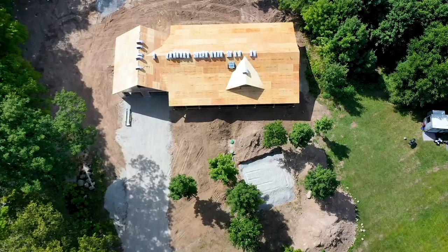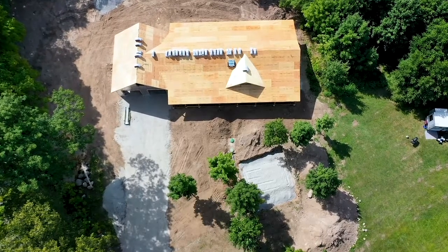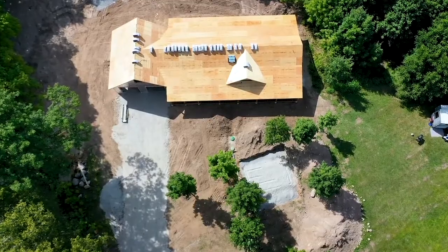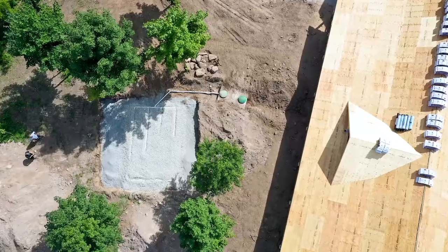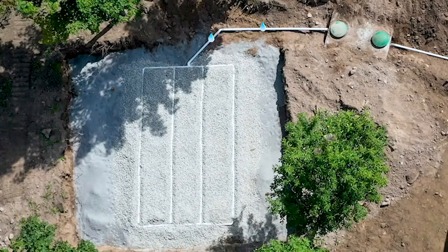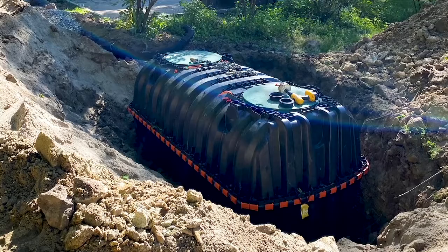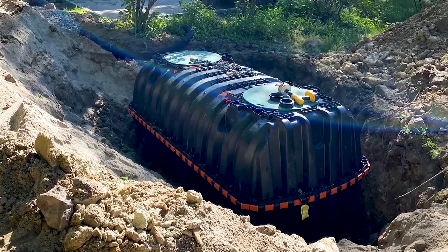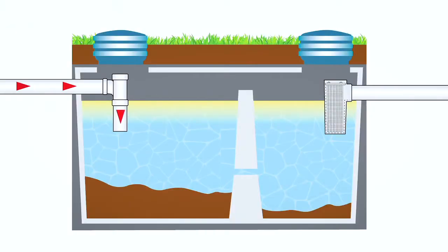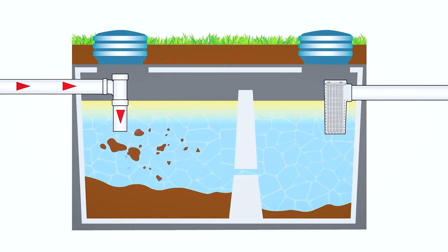There are two main components to the sewage system, although some systems may be designed with other critical elements. The first component is the septic tank and the second is the leaching bed. The tank is made of concrete or plastic and is buried below the ground. It receives all discharges, both solid and liquid, from the house through the toilets, sinks, showers, dishwashers and washing machines.